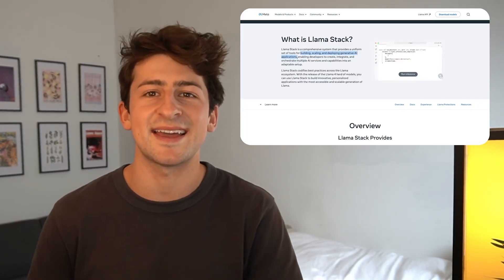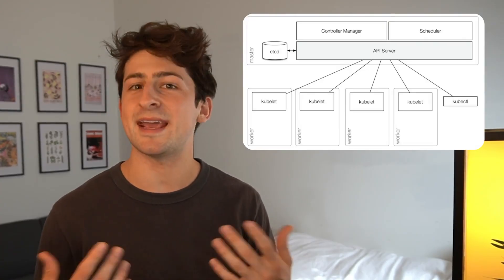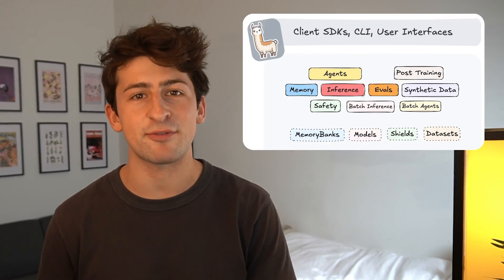Llama Stack provides one modular API, consistent between local and production, that can help you build and scale enterprise AI applications. The way I like to think about it is using Kubernetes as an analogy — because before Kubernetes, we were piecing together various infrastructure, custom scripts, and ad hoc configurations just to deploy our applications. Now in AI it's quite similar, with various tools, models, and vector databases — it's fragmented.